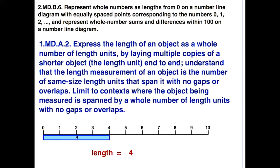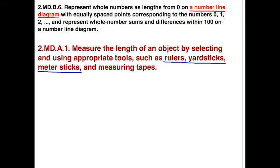The difference with standard 2MDB6 is that students view a distance of 4 as just one composite unit instead of 4 units of 1 laid end-to-end. If we look at the idea of a number line diagram, in the same grade level there's standard 2MDA1 that includes rulers, yardsticks, and metersticks — those are physical manifestations of a number line diagram.